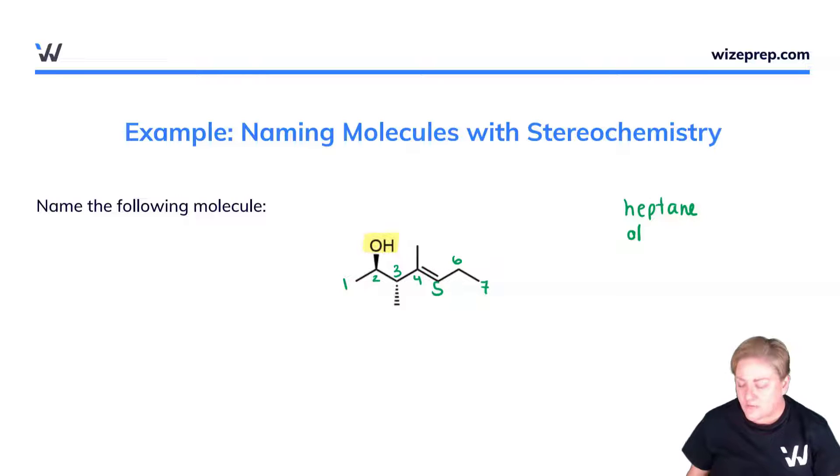So we need to assign R versus S at all of these chiral centers. I'm going to start with this red carbon here. It has a hydrogen atom that's to the back. This alcohol will be group number one. This methyl group here will be group number three. This hydrogen will be number four. And this whole decorated bit here will be group number two.